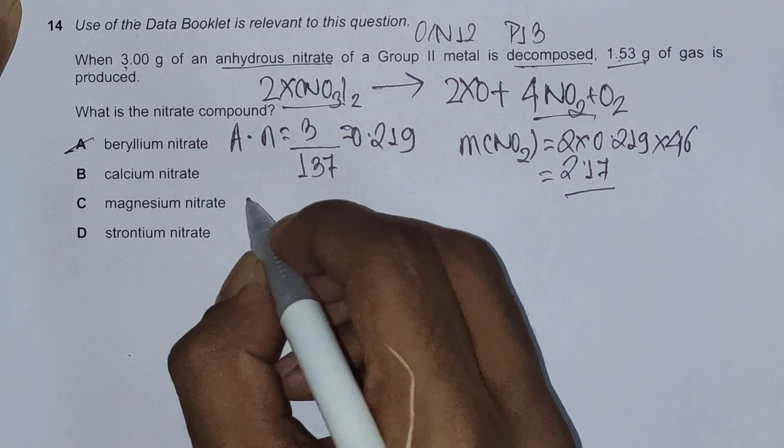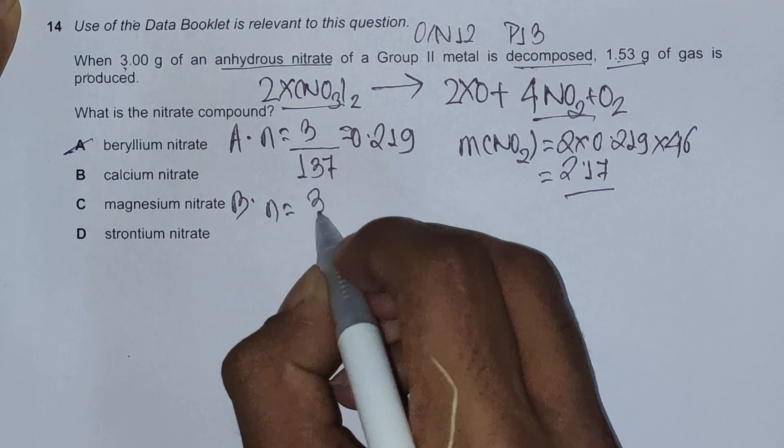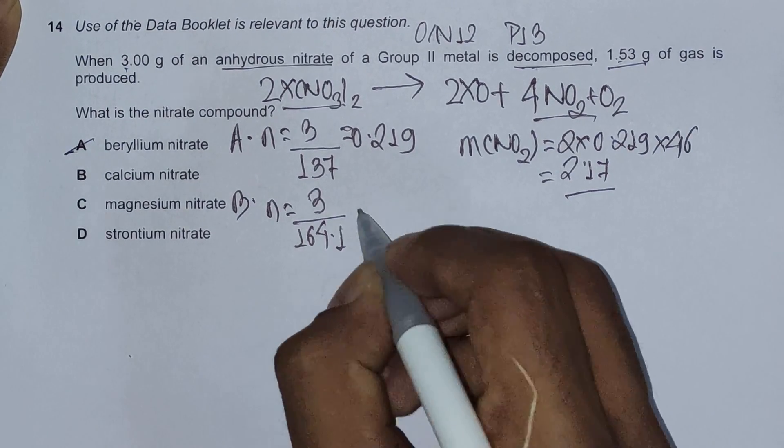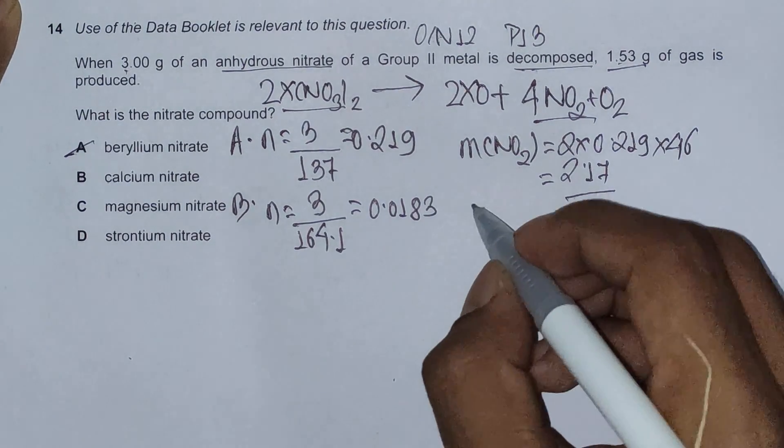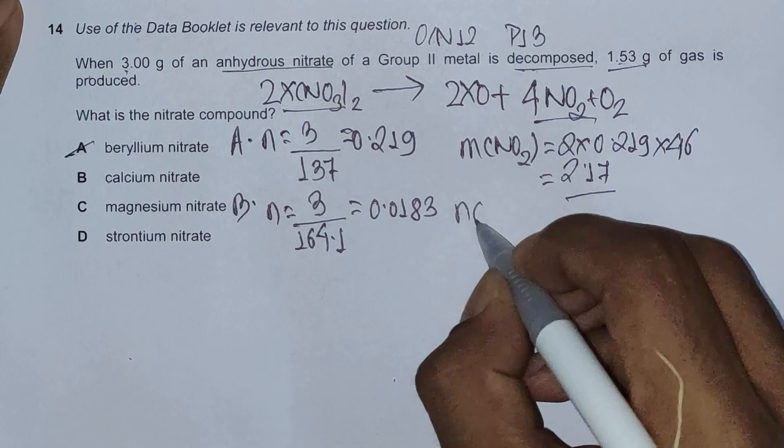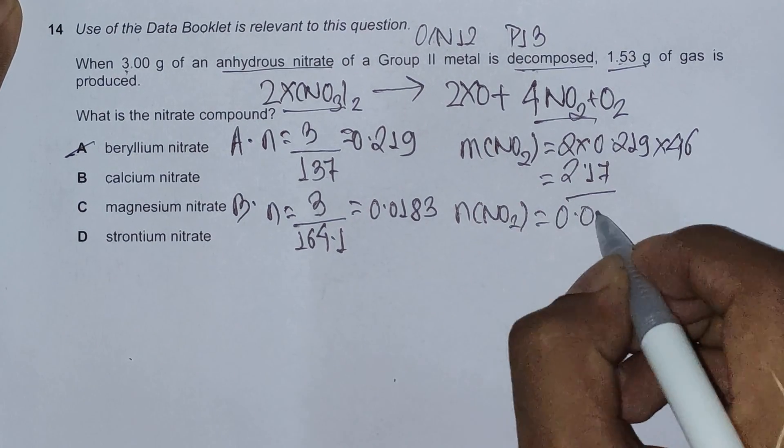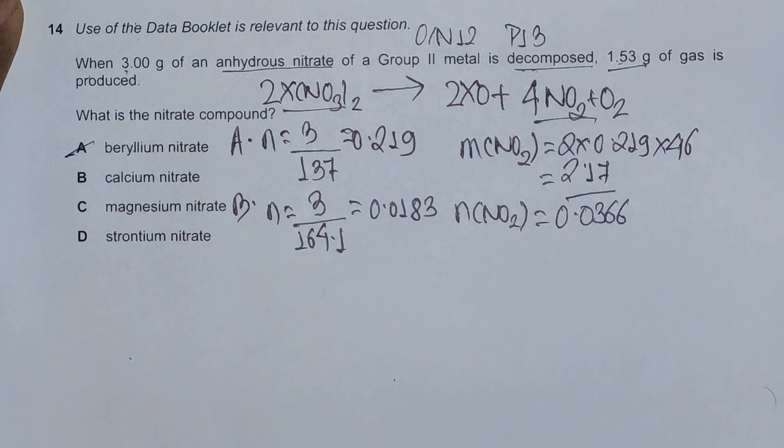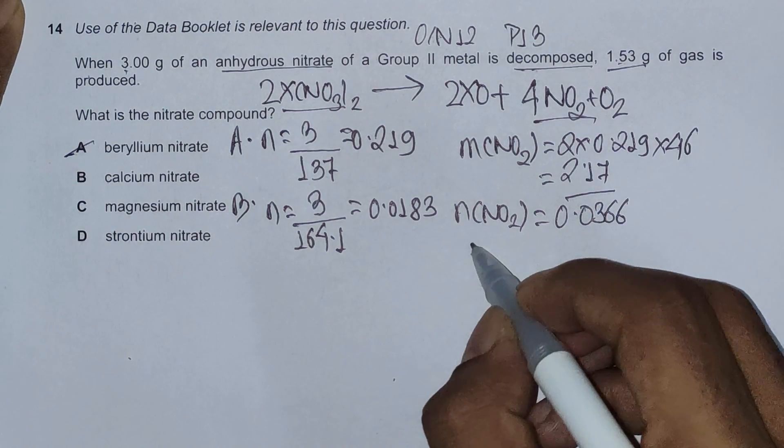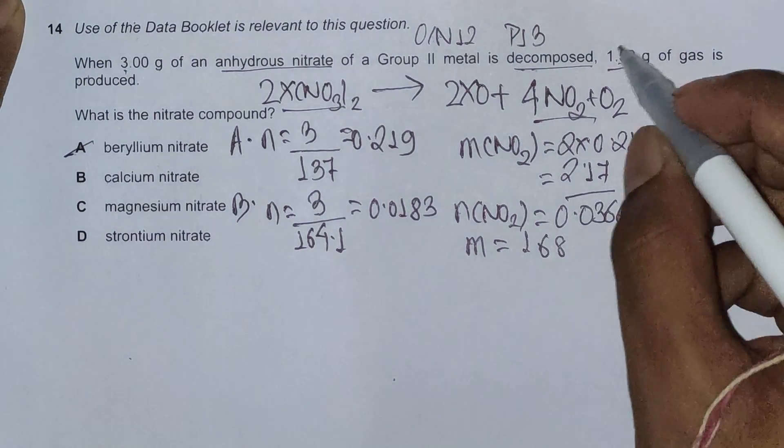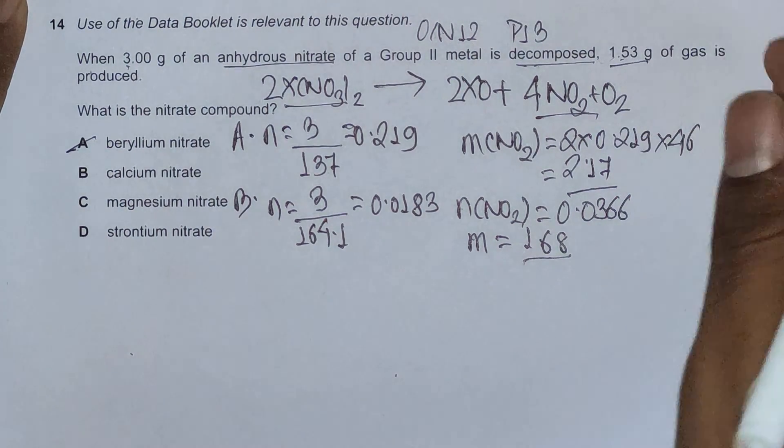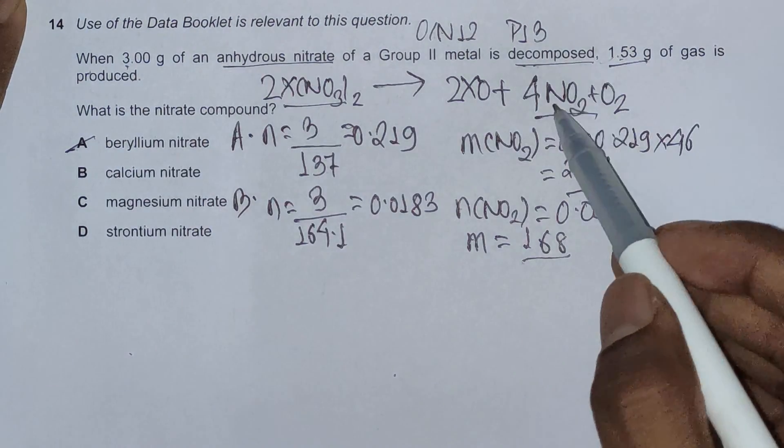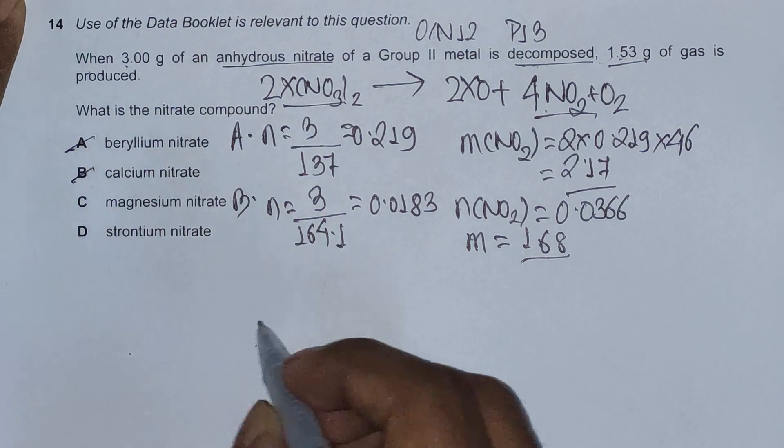As 2.17 already exceeds 1.53, that means we can reject A very easily. For option D, its moles are 3 divided by 164.1 which amounts to 0.0183. Again the moles of nitrogen dioxide is 0.0366, and using the same formula, 0.0366 multiplied by Mr value of nitrogen dioxide, its mass would be 1.68. Again using the same logic as before, 1.68 exceeds 1.53, so we can reject B as well.